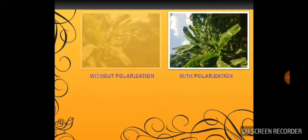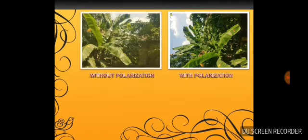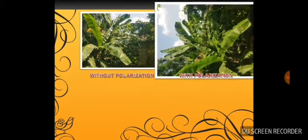More examples for the polarization and non-polarization photographs. Left side, without polarization, see there are multiple reflections over the banana tree plants. And the right side, see it is quite clear. No reflection.